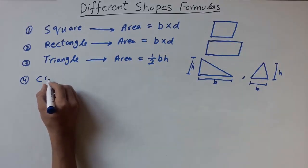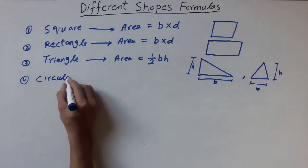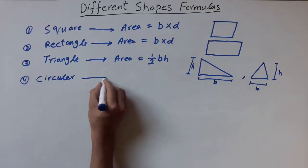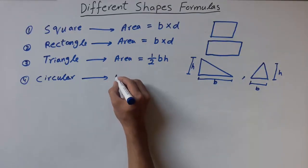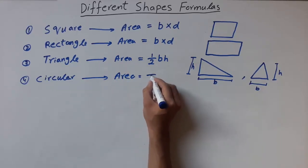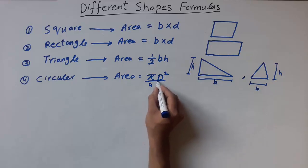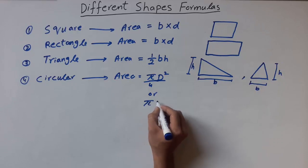Fourth one is circle. Area of circle is equal to pi over 4 D square, or we have pi R square.